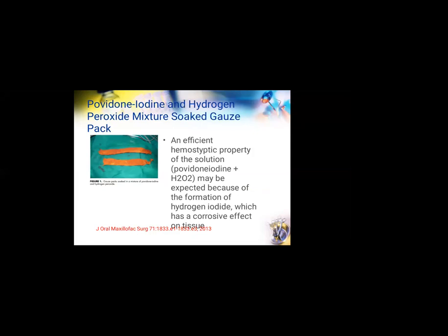Another method, described by surgeon Guru Raj Arakeri from Karnataka, involves povidone iodine and hydrogen peroxide mixture — 50 ml of povidone iodine and 10 ml of hydrogen peroxide. The hemostyptic property of this solution may be due to the formation of hydrogen iodide, which has a corrosive effect on tissue. The iodine acts as a chemical cauterization aiding hemostasis, and the pressure from biting on the gauze also aids in mechanical hemostasis.